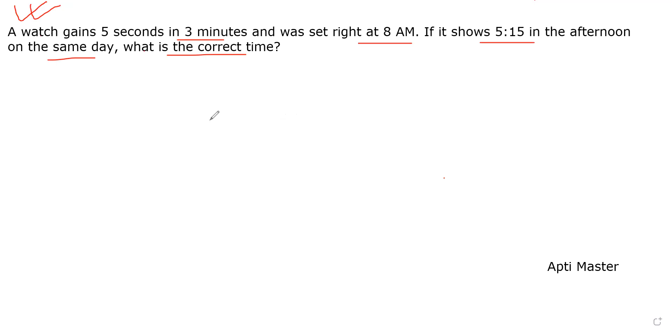The watch gains five seconds in three minutes. If we multiply it by 12, we get 60 seconds, which equals one minute. So in one minute it gains 5 seconds in 36 minutes.